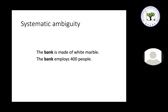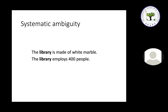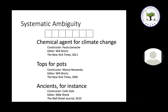This is systematic because it works for any word indicating an organization — 'the library is made of white marble' vs. 'the library employs 400 people'; 'the gas station is made of white marble' vs. 'the gas station employs 400 people.' Another type of systematic ambiguity that crossword constructors love to use is illustrated by three clues that all give the same answer: 'chemical agent for climate change,' 'tops for pots,' and 'ancients for instance' — and the answer all three share is ANAGRAM. 'Chemical agent' is an anagram of 'climate change' — rearrange the letters and you get the phrase.